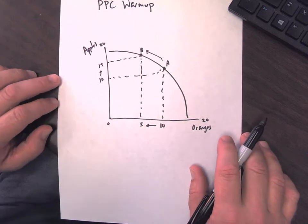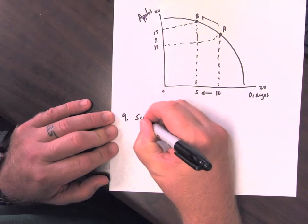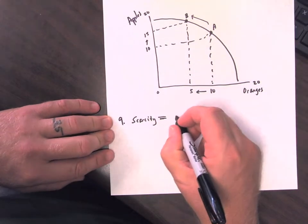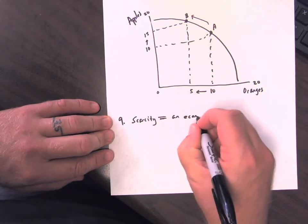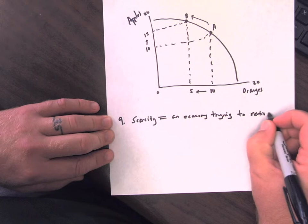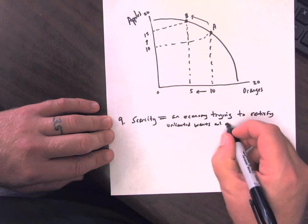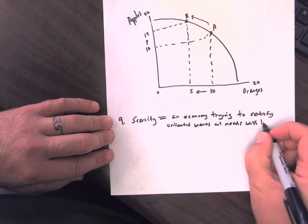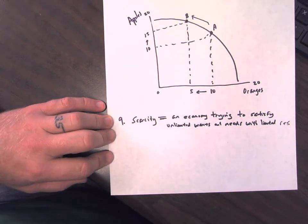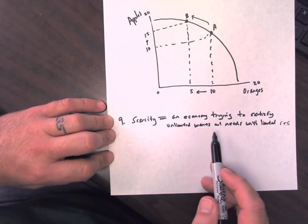Now, write down, or I'm sorry, define scarcity was number 9. Scarcity equals, I don't care if you're writing complete sentences or not, an economy trying to satisfy unlimited wants and needs with limited resources. So, scarcity itself means we don't have enough of it. But the science of scarcity is economics. So scarcity to us is the economy trying to satisfy these unlimited wants and needs with limited resources.